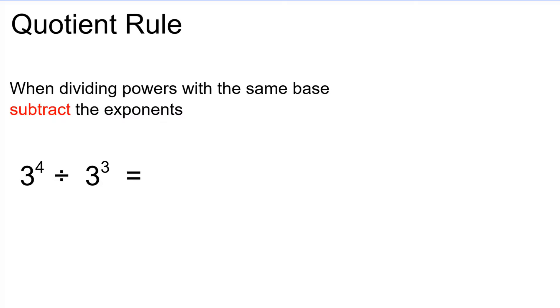So with this one, the base will still remain the same. But because we're dividing, instead of adding our exponents like we did with multiplication, we have to subtract them in the order they appear in the expression. So it's going to be 3 to the power of 4 minus 3, which equals 3 to the power of 1. And anything to the power of 1 is just itself. So our final answer is going to be just 3.